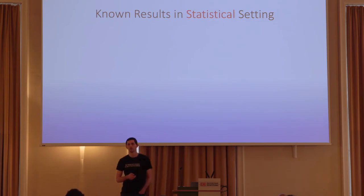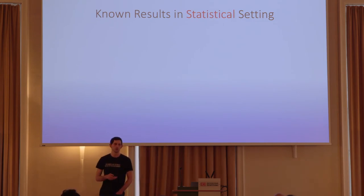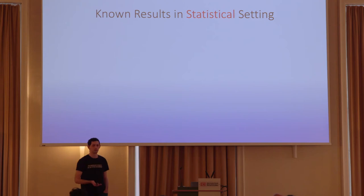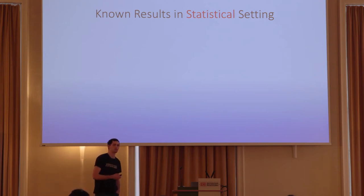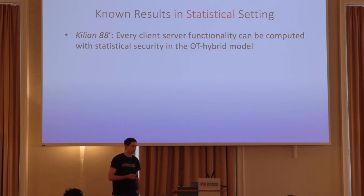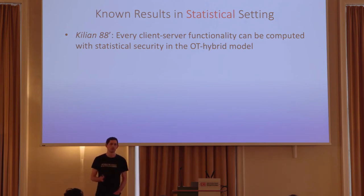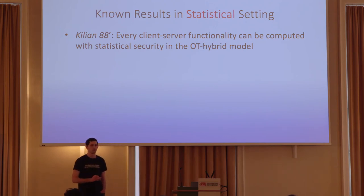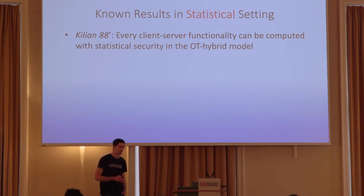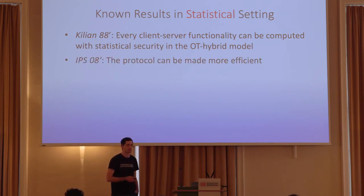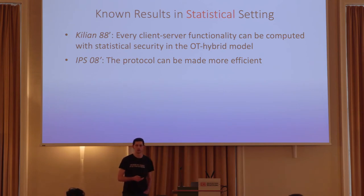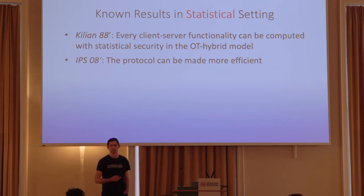What do we know about this model? I'm going to talk about both the statistically secure and perfectly secure protocols, starting with the statistical one. We have the classical result by Kilian that shows any client-server functionality can be computed in the OT hybrid model with statistical security. And 20 years later, Ishai, Prabhakaran, and Zahai showed how to do it a lot more efficiently.